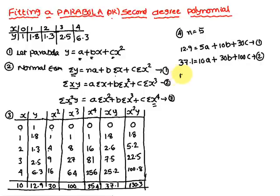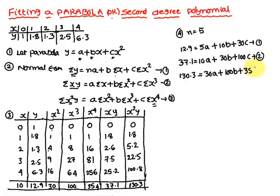The third normal equation: Σx²y = aΣx² + bΣx³ + cΣx⁴, giving 130.3 = 30a + 100b + 354c.